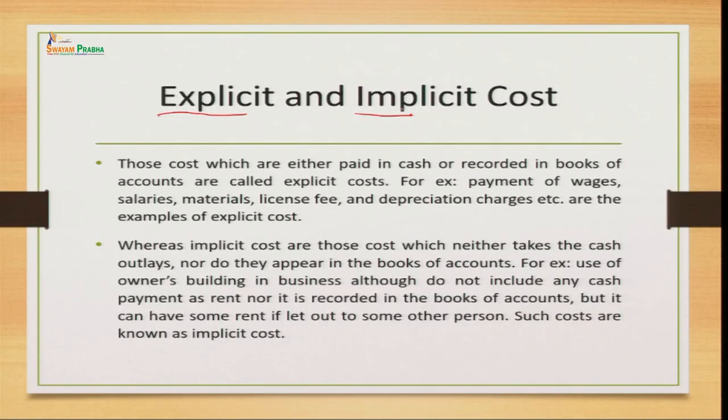Implicit costs are those costs which we are not paying to anybody. The costs which are either paid in cash or recorded in the books of accounts are called explicit cost. This includes payments made to someone — like salaries, raw material costs — as well as costs recorded in books like depreciation. Our assets depreciate every year and that amount is shown in the books of accounts. So depreciation is also part of explicit cost. Examples of explicit cost include wages paid to labor, salaries, cost of purchasing material, and license fees.